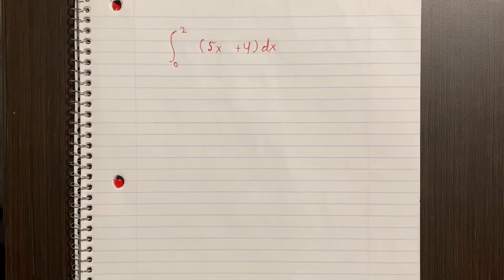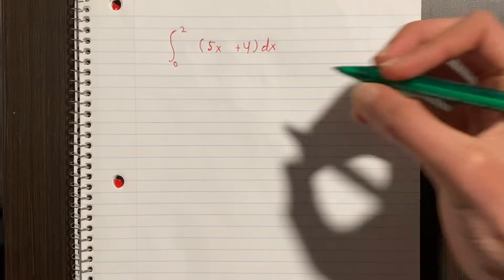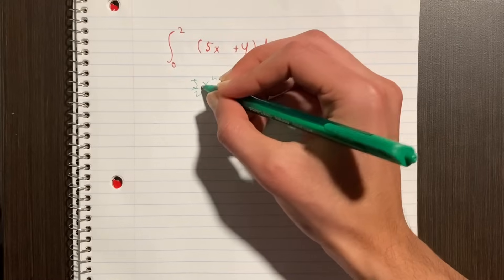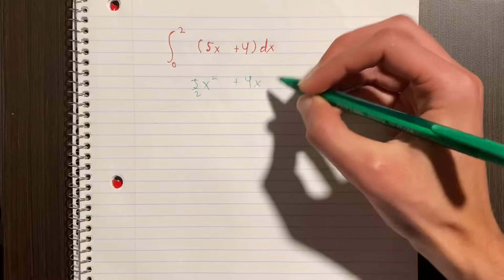The other half is finding the integral, which is also called the antiderivative. So you have x squared times 5 over 2, because the derivative of this becomes 5x, plus 4x because the derivative of 4x becomes 4.